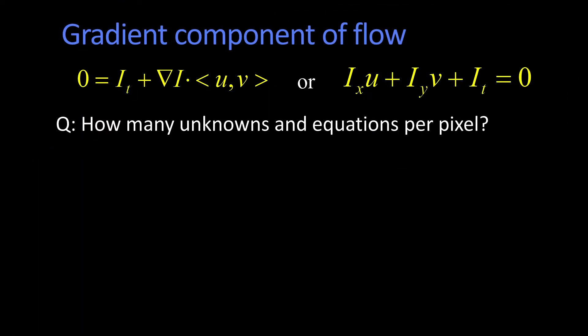Question: how many unknowns and how many equations per pixel? The number of unknowns is easy. What was I trying to solve for? u and v, right? u and v is which way is this point moving. Great. How many equations? Well, yes, there are two equations up there, but they're the same equation. I have two unknowns but only one equation per pixel.